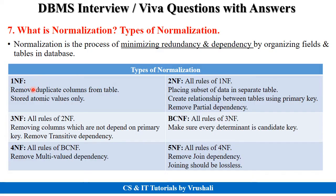First normal form removes duplicate columns in the table and stores atomic values only. Second normal form follows all the rules of first normal form and removes partial dependency, placing subsets of data in separate tables. Third normal form follows all the rules of second normal form and removes transitive dependency. BCNF follows all the rules of third normal form and ensures every determinant is a candidate key. Fourth normal form follows BCNF rules and removes multi-valued dependency. Fifth normal form follows all rules of fourth normal form and removes join dependency.